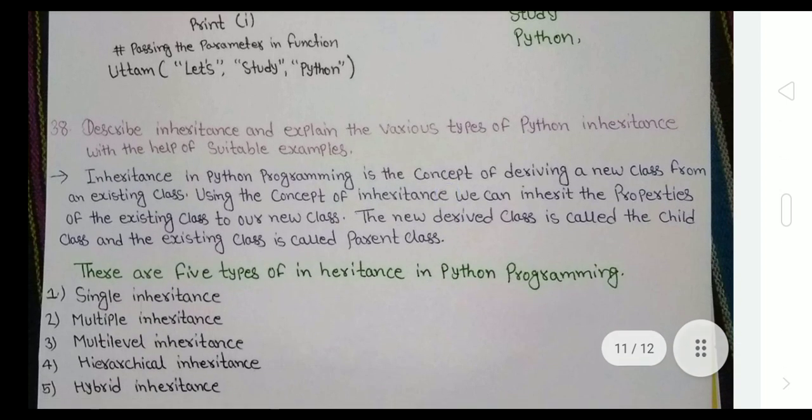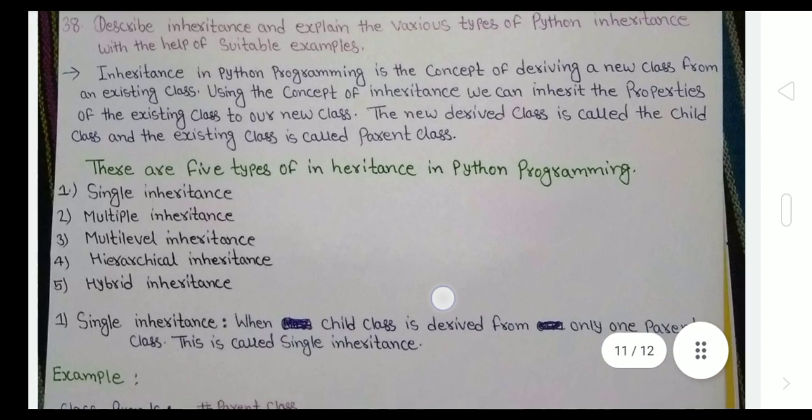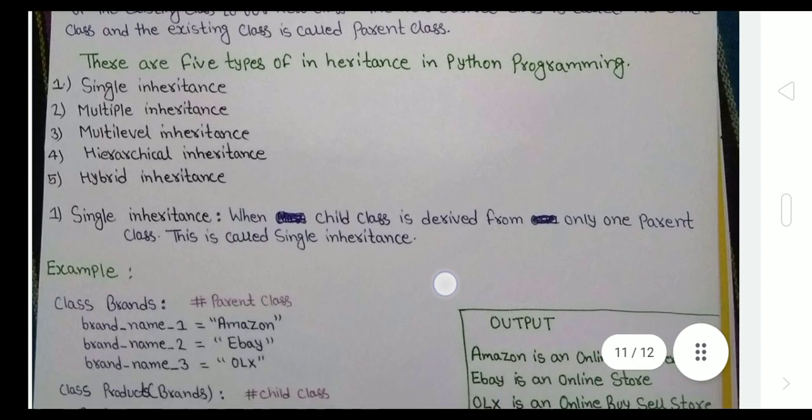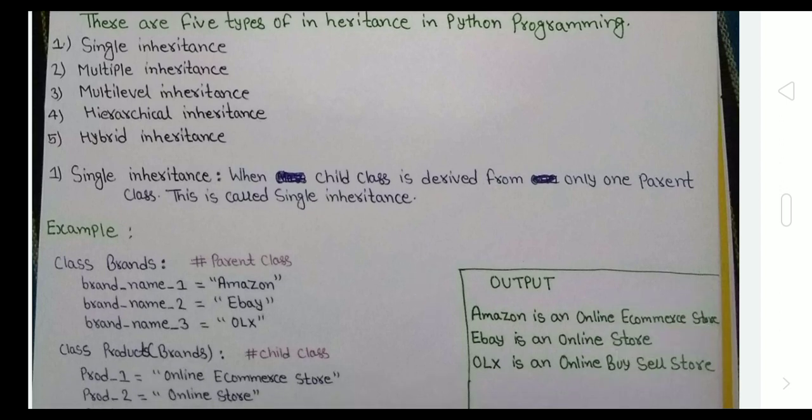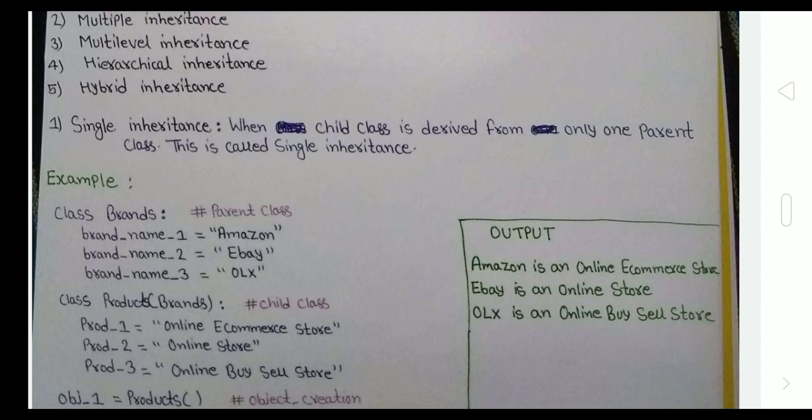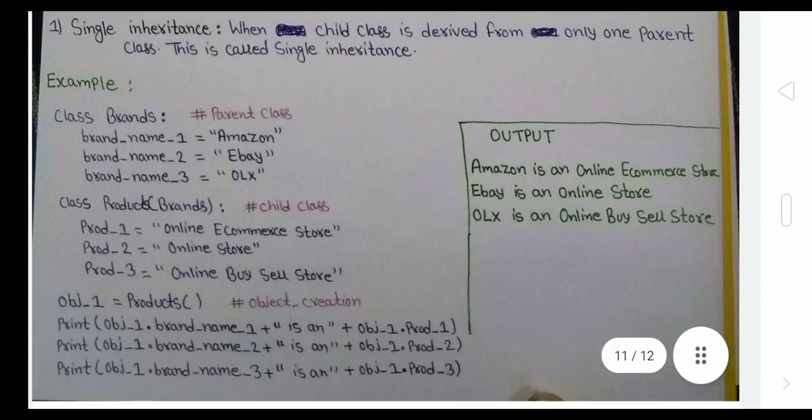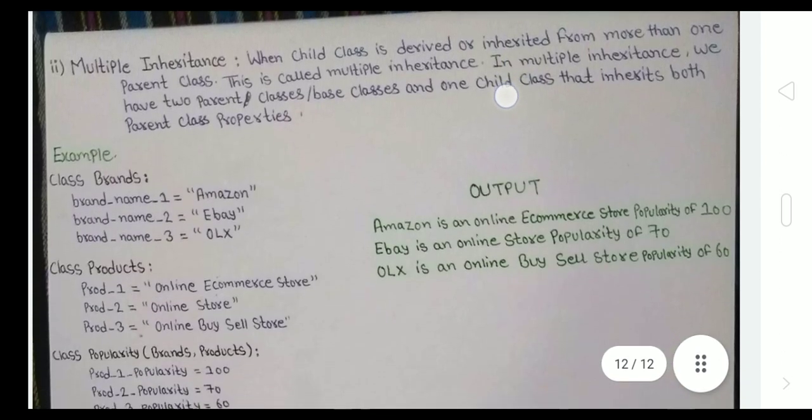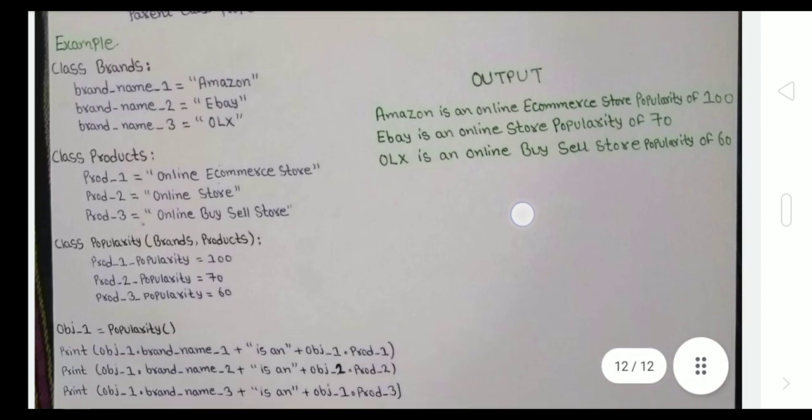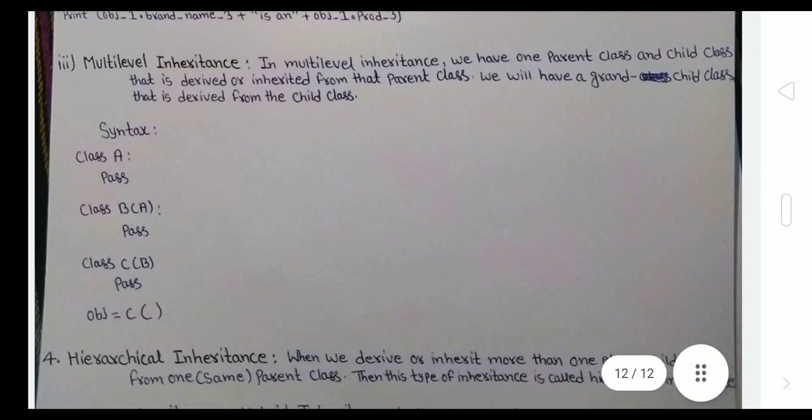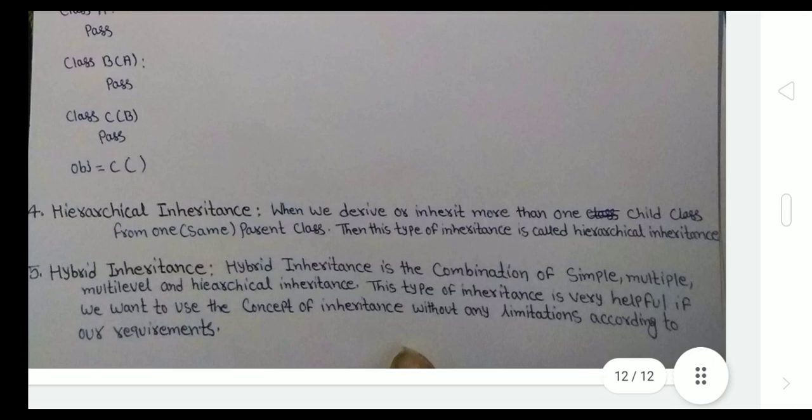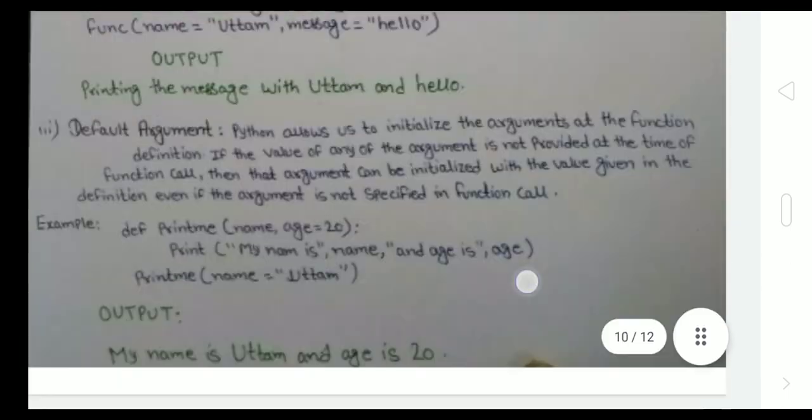What about inheritance? Inheritance section is a little bit long but you can write it because it's a ten marks question. Five types of inheritance, but in our book there are only three given, so you can ignore hierarchical inheritance and hybrid inheritance. Here is the multiple inheritance with an example, and here is the multi-level inheritance, and here is the hierarchical inheritance and hybrid inheritance.